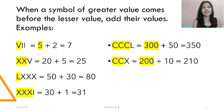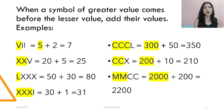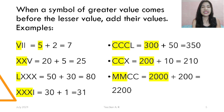We also have CCX: CC is 200 and X is 10, so 200 plus 10 equals 210. We also have MMCC: MM is 2000 and CC is 200, so 2000 plus 200 equals 2200.